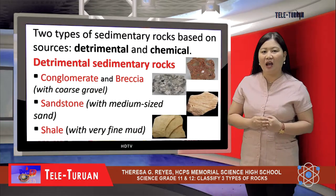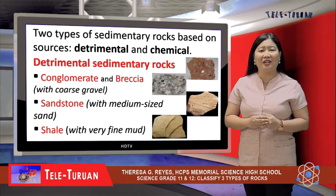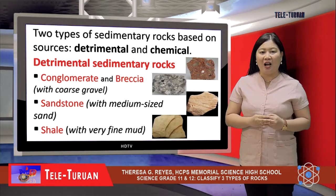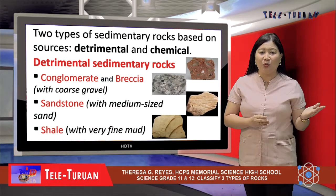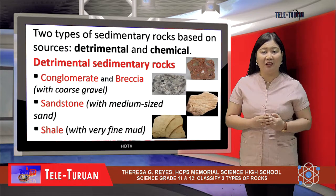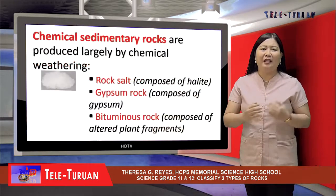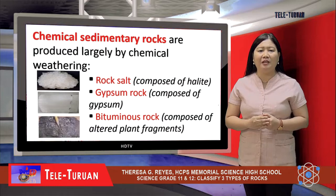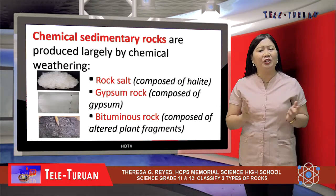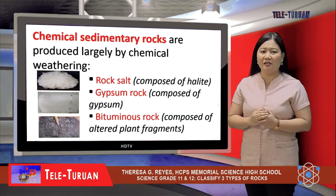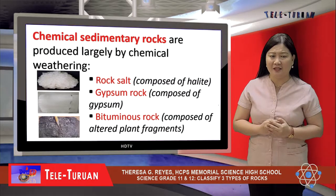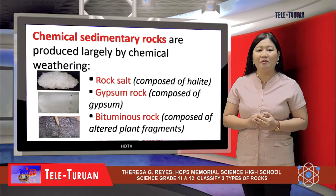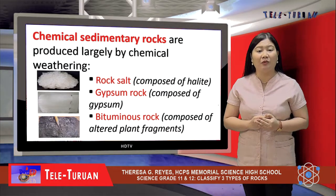Detrital sedimentary rocks come from weathered rocks, which are classified based on particle size: conglomerate and breccia with coarse gravel, sandstone with medium-sized particles, and shale with very fine material. Chemical sedimentary rocks are produced largely by chemical weathering. The basis for grouping is their chemical composition, such as rock salt composed of halite, gypsum rock composed of gypsum, and bituminous rock composed of altered plant fragments.